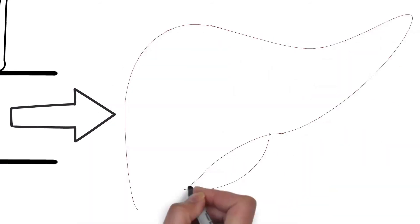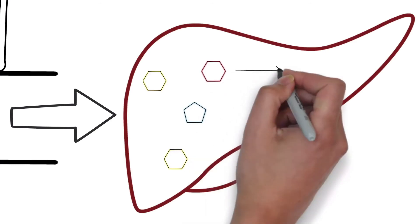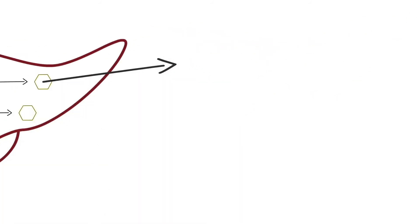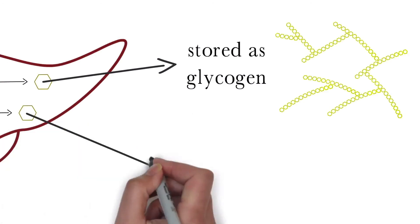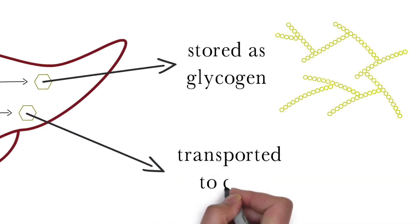Once inside the bloodstream, all monosaccharides are transported to the liver via the portal vein. Inside the liver, most of the fructose and galactose is immediately processed, often being converted into glucose or other products. As for glucose, some of it can be absorbed by the liver to be stored as glycogen. The rest is transported back into circulation, where it can be taken up by cells for their energy requirements.